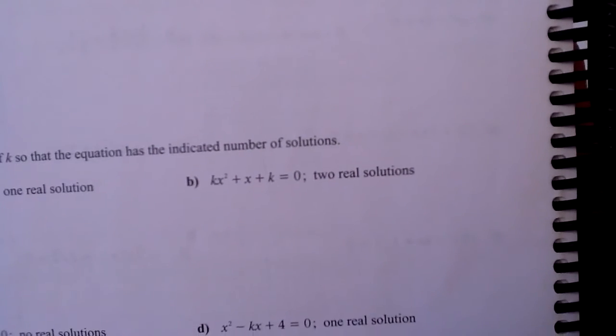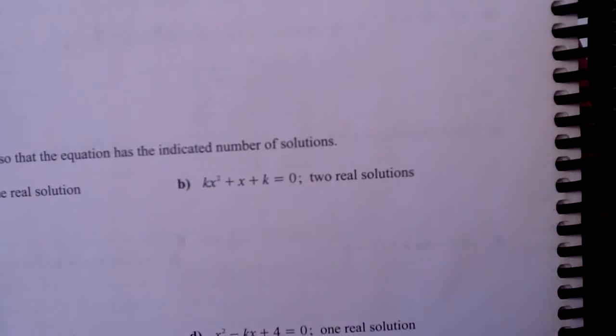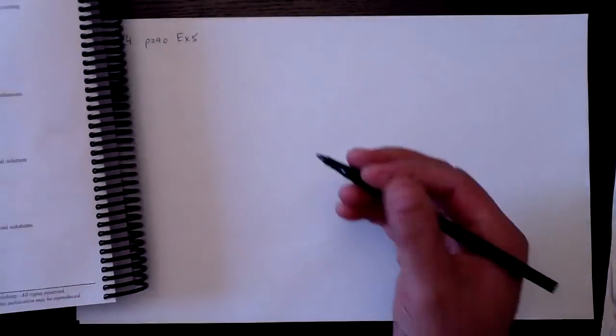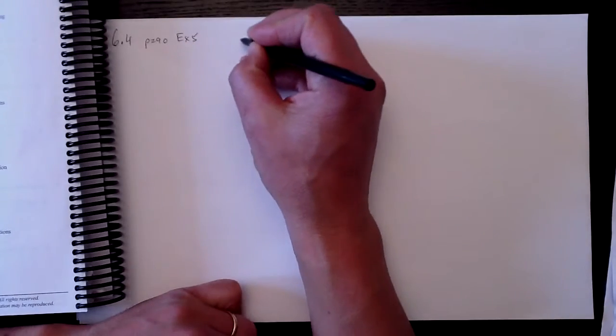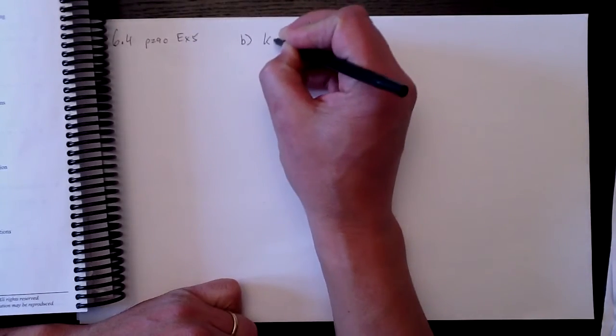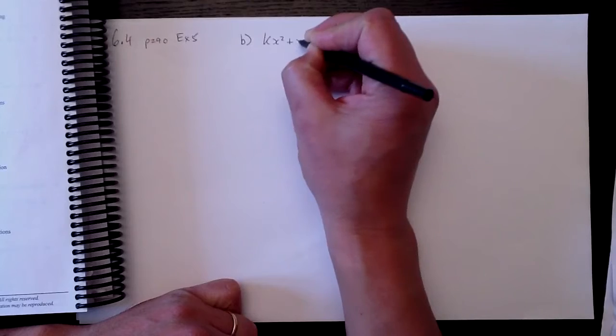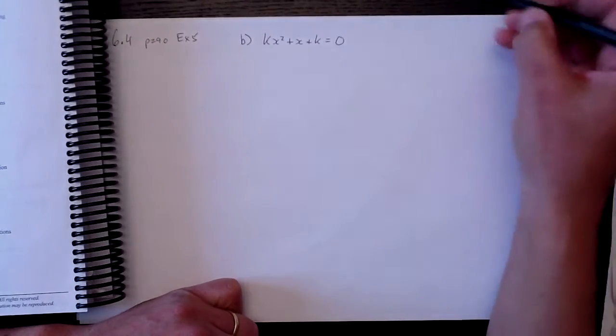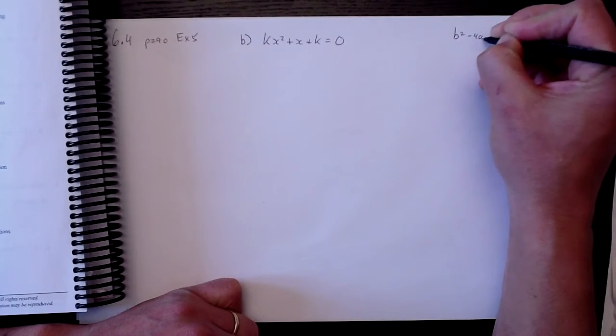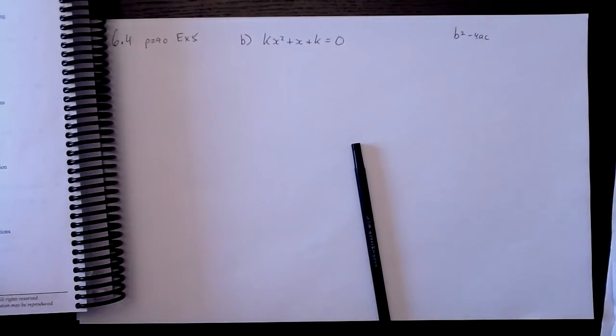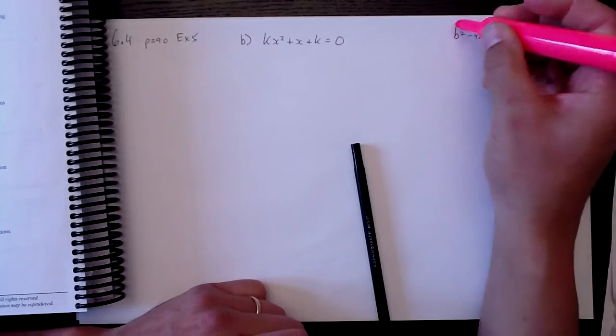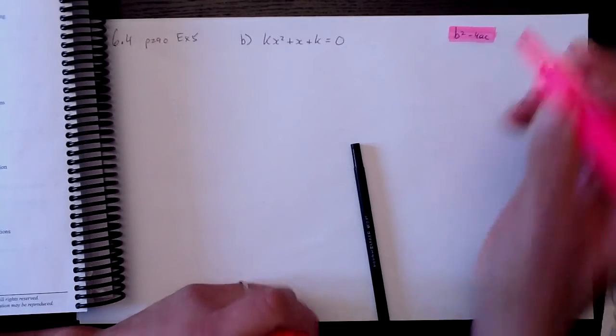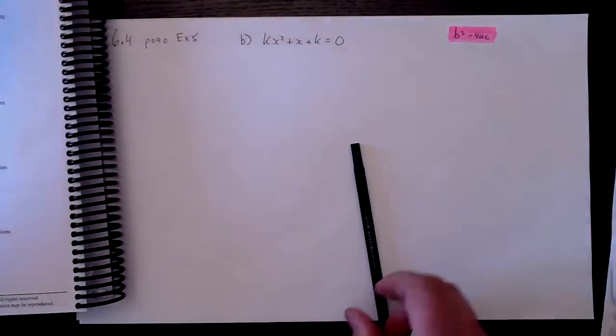Two real solutions, that must mean that the discriminant will be positive. All right, so let's take a look at that. This is B. That's k x squared plus x plus k equals zero, and I'm going to write the discriminant here, B squared minus 4ac, because I like to be reminded of that just in case I forget, and that's why I'm color-coding it too, so in my mind I've got this pink smear called the discriminant.